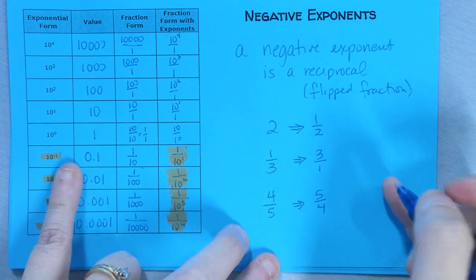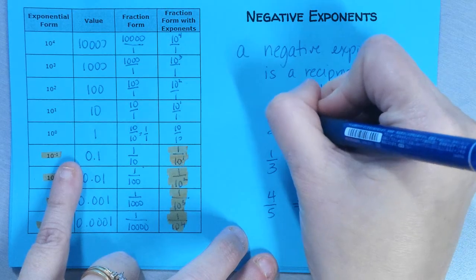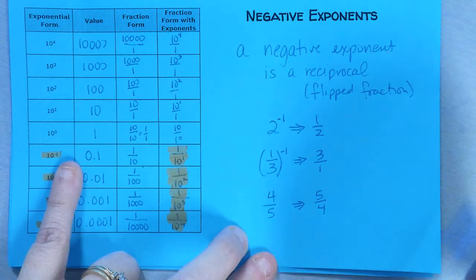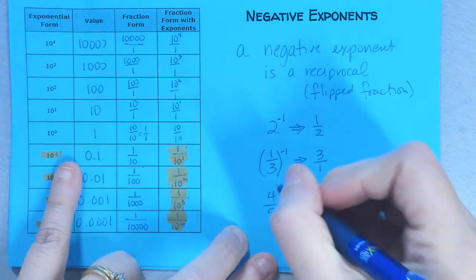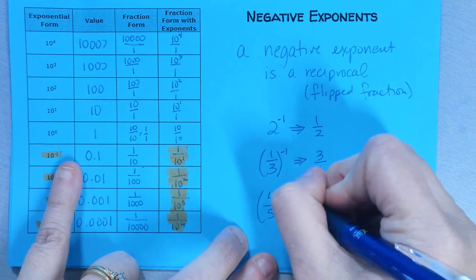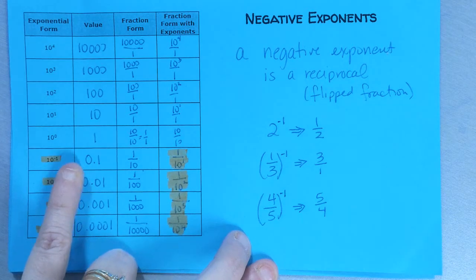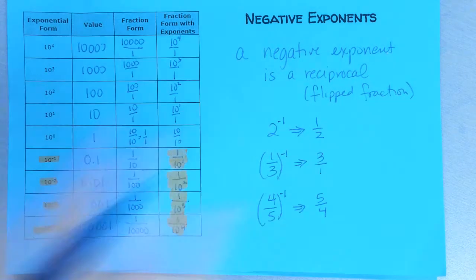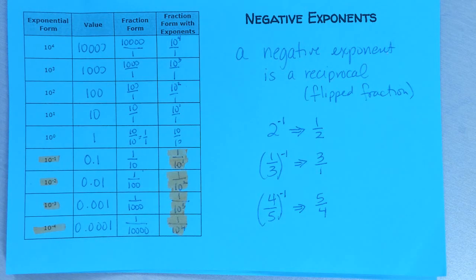What I could actually say is that 2 to the negative 1 equals 1 half. 1 third to the negative 1 equals 3. 4 fifths to the negative 1 equals 5 fourths. This is how we do negative exponents. And tomorrow we'll talk a little bit more about how we actually process that.